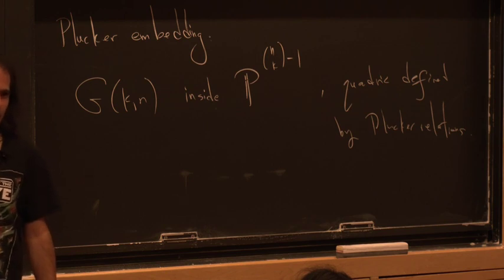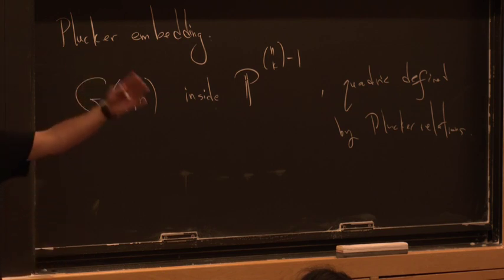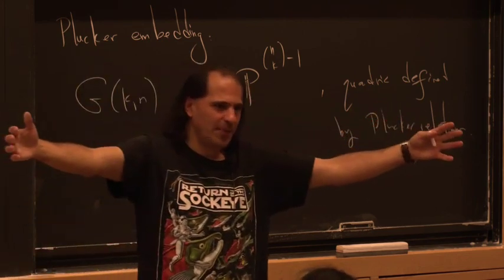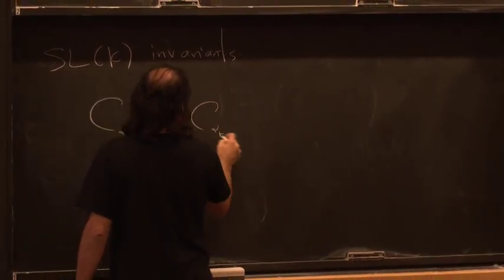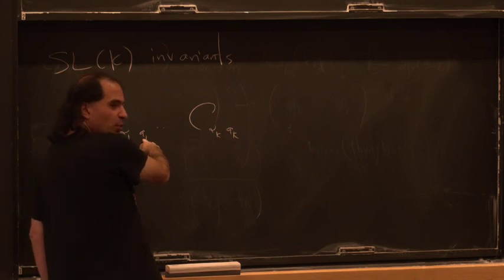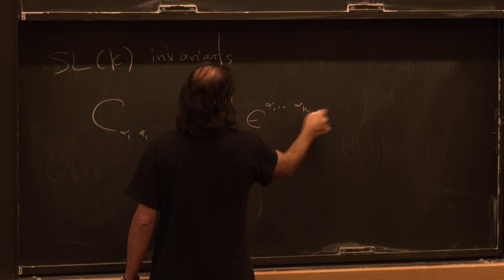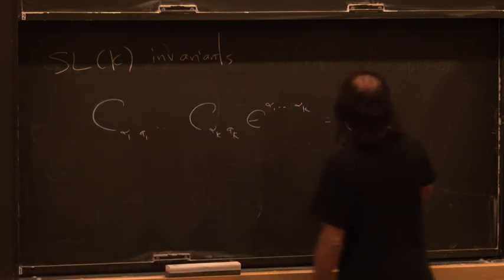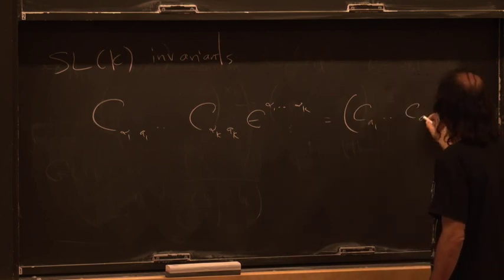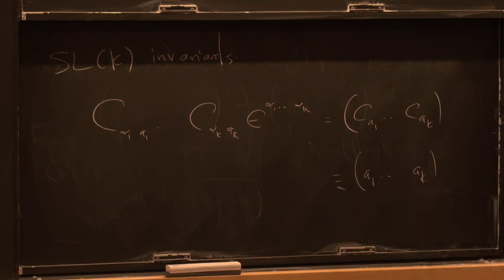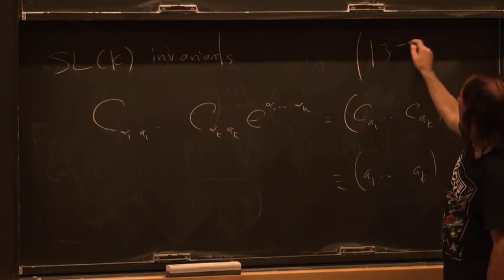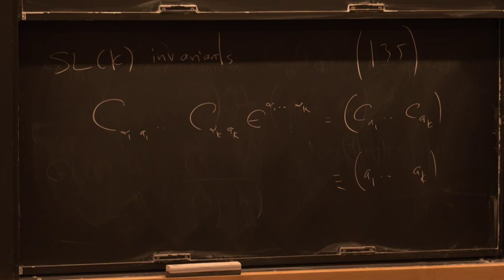A minor is: take k columns, contract all row indices with the epsilon symbol. Explicitly: C_{alpha1 A1} ... C_{alphaK AK} epsilon_{alpha1...alphaK}. Sometimes I'll put it in brackets, sometimes I'll put the C's, sometimes I won't — it's just a notational device. So if I write an expression like (135), I have in mind some 3-by-something matrix, and I'm taking the minor where I take columns 1, 3, 5 and compute the determinant.